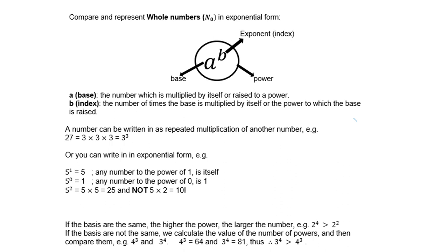A number can be written as repeated multiplication of another number. For example, 27 can be written as 3 times 3 times 3, which is then 3 to the power of 3.